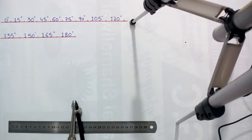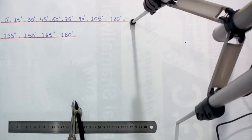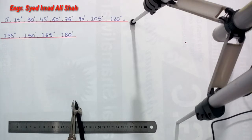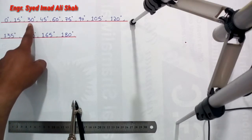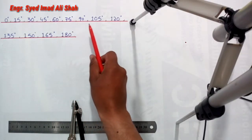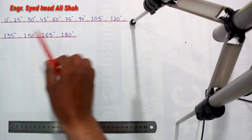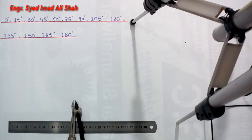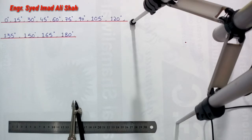Bismillahirrahmanirrahim. Dear students, today we will discuss how to draw angles with the help of a compass. With a compass we can draw only certain angles: 0, 15, 30, 45, 60, 75, 90, 105, 120, 135, 150, 165, and 180 degrees — that is, multiples of 15 degrees. Let's get started.